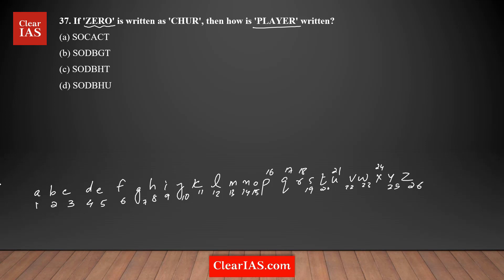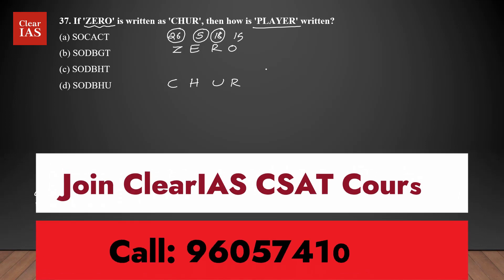So right now we have the proper table. So what you need to do is you write down the original word ZERO and the corresponding code word was C, H, U, R. Now what you need to do is you write down the corresponding position of each letter. Z is 26, E is the fifth letter, five. R is gonna be the 18th letter and O is gonna be 15th letter. O is 15.